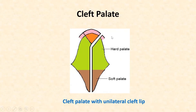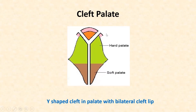The figure shows a cleft palate with a unilateral cleft lip. Clefts of the palate result in abnormal communication between the mouth and nose, and may be unilateral or bilateral. In this particular figure we can appreciate a Y-shaped cleft in the palate with bilateral cleft lip. Clefts of the palate that extend to its anterior end are associated with cleft lip.